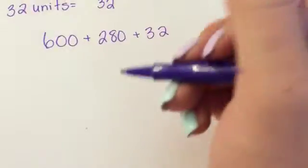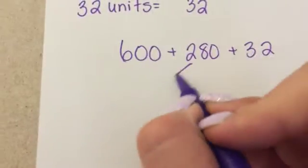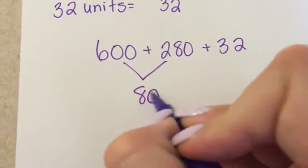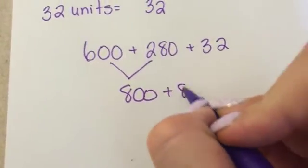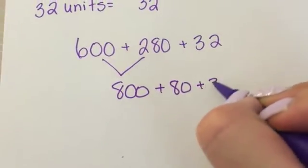First I'm going to look at my hundreds. I have 600 plus 200 here. So I know that that's equal to 800. Plus 80 plus 32.